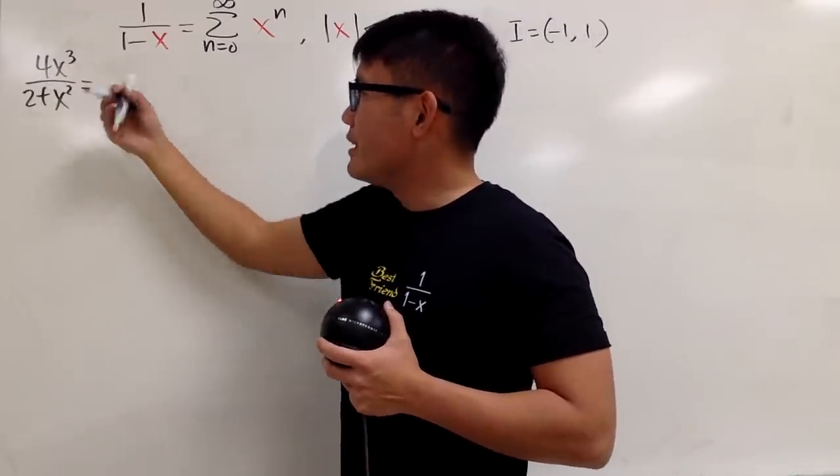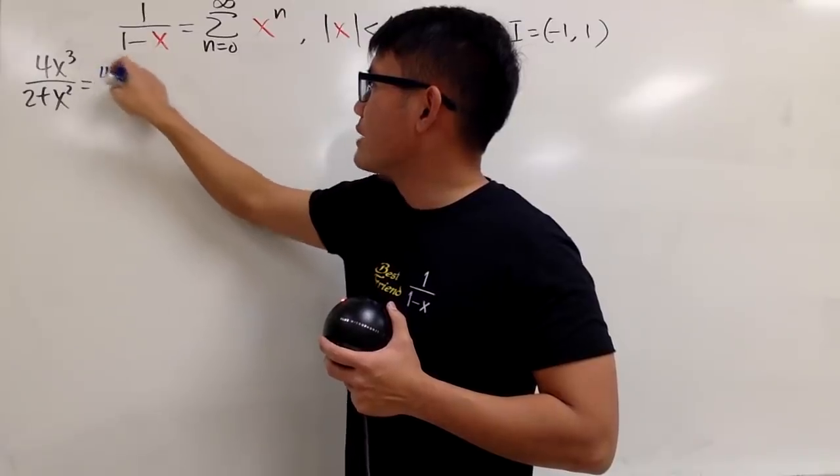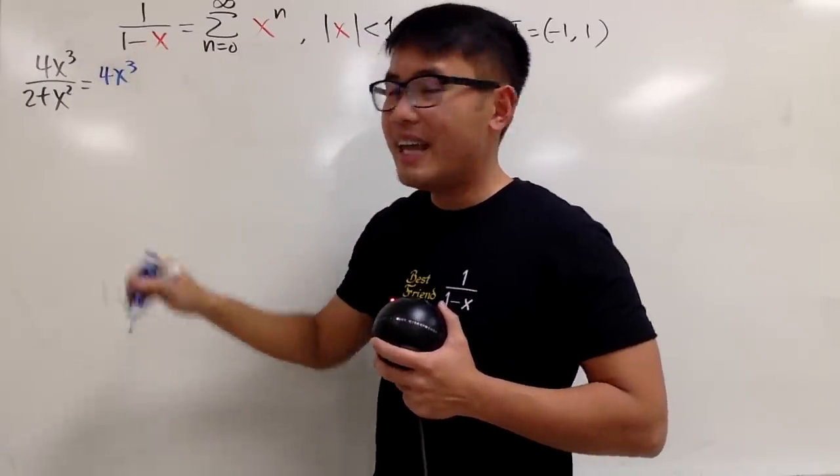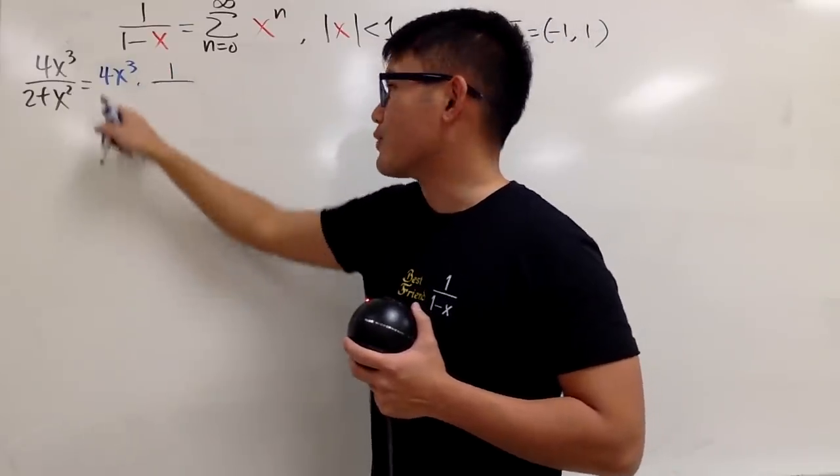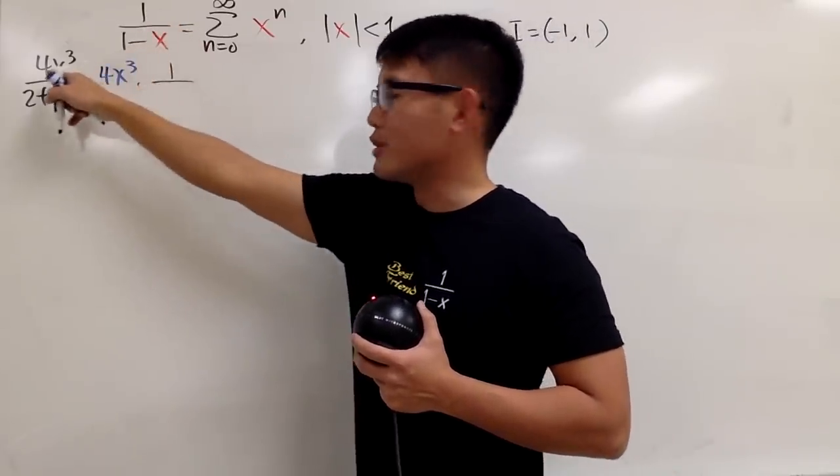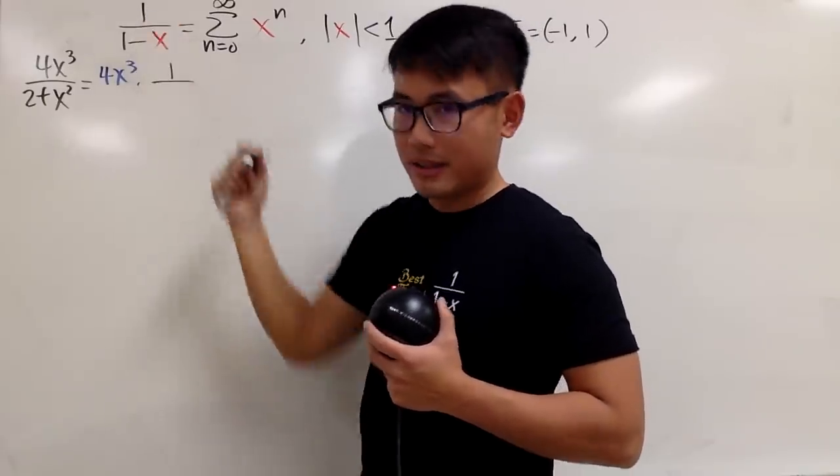This right here, I will just write it down the 4x to the third power first, and then multiply by 1 over. And can we do that? Yes, we can, because 4x to the third power times 1 is still 4x to the third power. And I have this 1 on the top now. That's good.